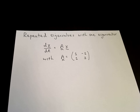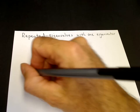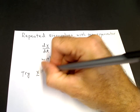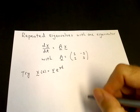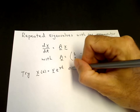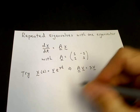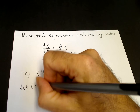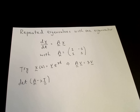We consider the system of linear equations where there are repeated eigenvalues and only one eigenvector. We take a specific matrix as our example. If we try the ansatz x equals v times e to the lambda t, then we get our eigenvalue problem: A v equals lambda v. We look at the determinant of A minus lambda I and set that equal to zero.